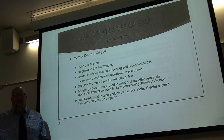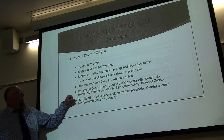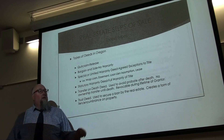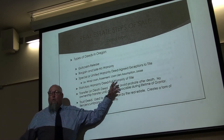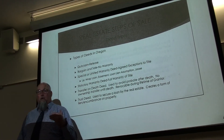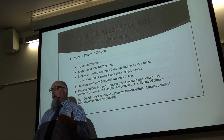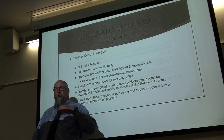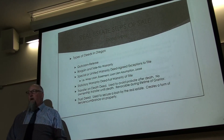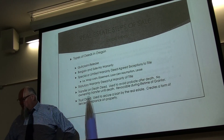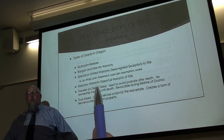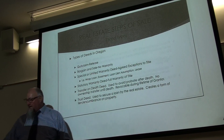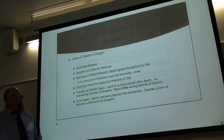The statutory warranty deed is what you normally want as a buyer. This is full warranty of title — the seller guarantees they are the owner and there are no problems with the title other than any issues the buyer has agreed to. Generally speaking, a bank will require a statutory warranty deed unless they specifically agree to one of the lesser quality deeds.